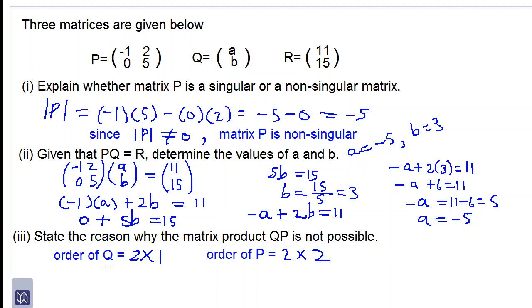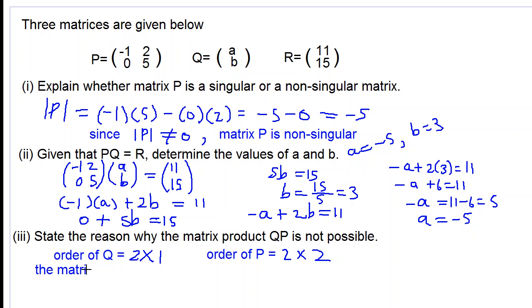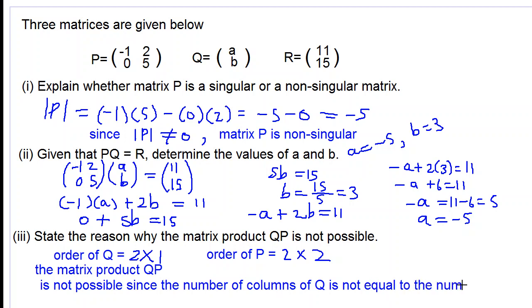So if we multiply Q by P we see that the number of columns of Q is not equal to the number of rows of P. So therefore the matrix product QP is not possible since the number of columns of Q is not equal to the number of rows of P.